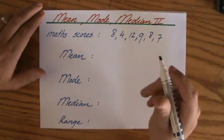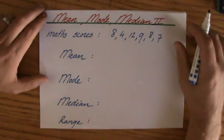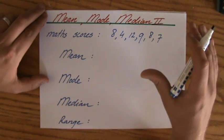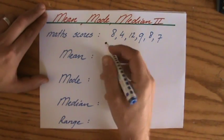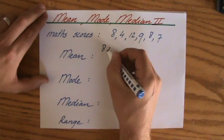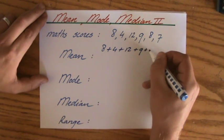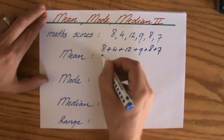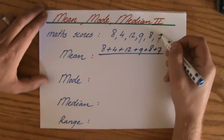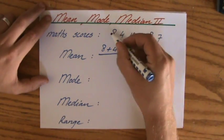Now the mean, I have learned in my previous videos that that is the sum of all the values divided by the amount of values. So I'm going relatively quickly. I'm going to say 8 plus 4 plus 12 plus 9 plus 8 plus 7, and all of that divided by 1, 2, 3, 4, 5, 6.